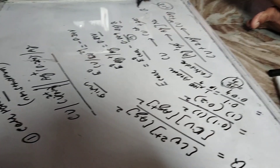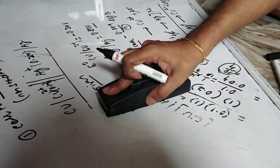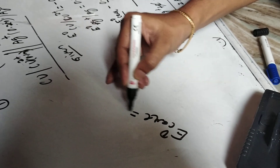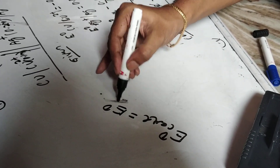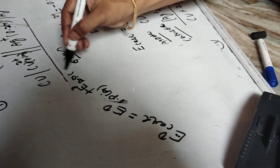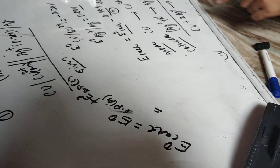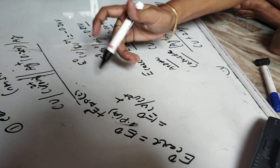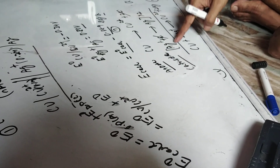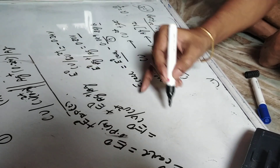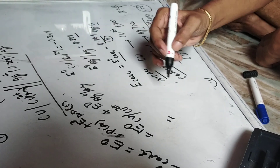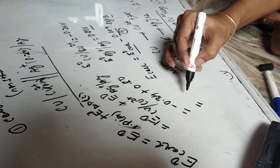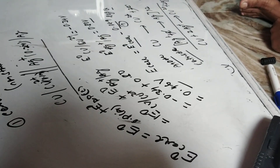Now we calculate E°_cell. E°_cell = E°_oxidation at anode + E°_reduction at cathode = E°(Cu → Cu²⁺) + E°(Ag⁺ → Ag). The value of E°(Cu/Cu²⁺) oxidation is −0.34 V and E°(Ag⁺/Ag) reduction is +0.80 V. So E°_cell = −0.34 + 0.80 = 0.46 V.